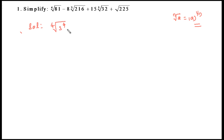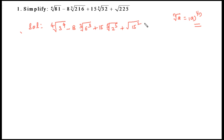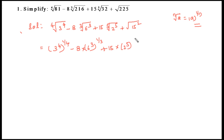The fourth root of 81: we write 81 as 3 to the power of 4. The cube root of 216: we write 216 as 6 cubed. The fifth root of 32: we write 32 as 2 to the power of 5. The square root of 225: we write 225 as 15 squared. So the expression becomes: (3^4)^(1/4) − 8·(6^3)^(1/3) + 15·(2^5)^(1/5) + (15^2)^(1/2).